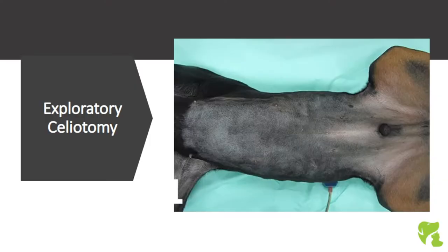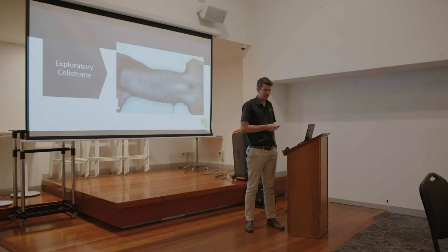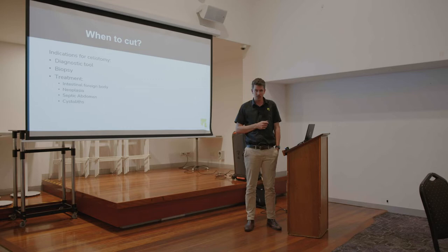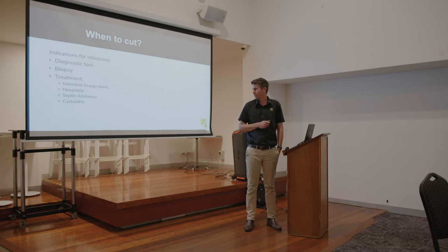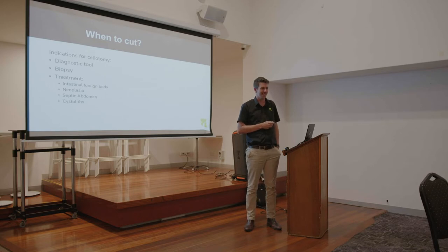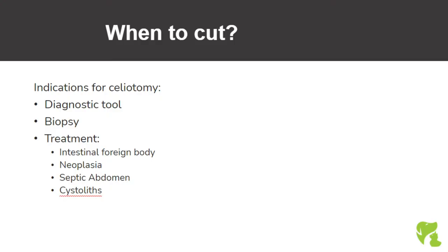An X-Lap — just about every one of us has done them over the years for various reasons, whether it's foreign bodies, tumours, splenectomies, all sorts. So when do we cut? The main indications are probably treatments — intestinal foreign bodies being the most common. Neoplastic lesions, the classic heme abdomen at five o'clock on a Friday afternoon, a dog rolling in needing a splenectomy. These days you'd normally send it to the emergency centre. We also have septic abdomens, uroliths, and things like that.